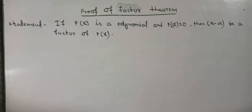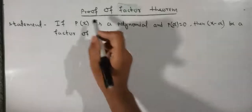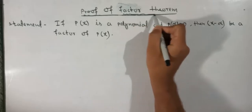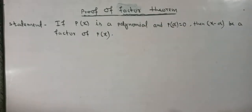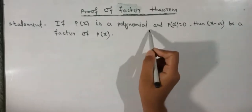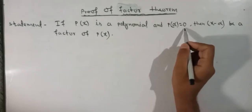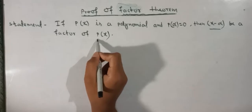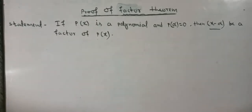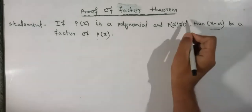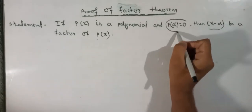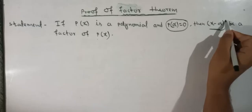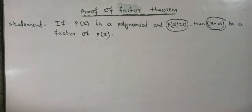Hello everyone. In this video we will see the proof of the Factor Theorem. The statement is: if px is a polynomial and p(alpha) equals 0, then x minus alpha is a factor of px. This is the statement — it is given and it is to be proved.